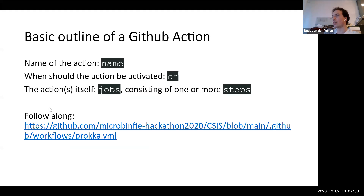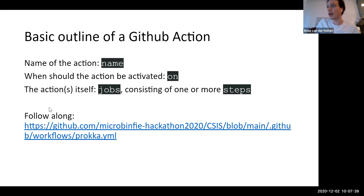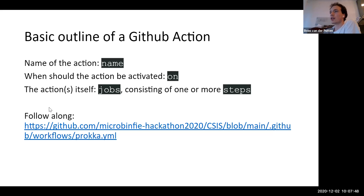Now we get to GitHub Actions itself. It basically consists of three sections. First, you have to name the action — that's the name section. Then the action should be triggered on certain events, defined by the section that starts with 'on'. And then the actions themselves are contained in the jobs section, and each job consists of one or more steps.